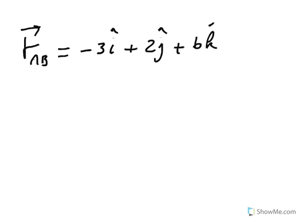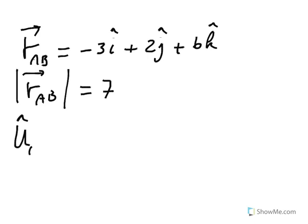So recall that R_AB, the position vector was minus 3i plus 2j plus 6k. And the magnitude of this, you could write it as R_AB with an absolute value, and that's the magnitude, which is 7. So now, what is the unit vector from A to B? The unit vector from A to B is simply defined as U_AB. You have to take this position vector R_AB and divide it by the magnitude of it, which is 7.